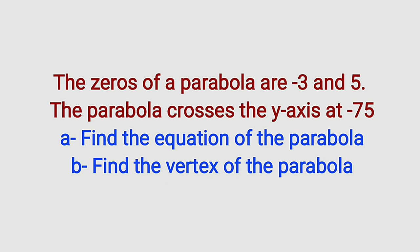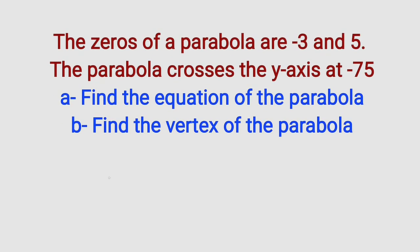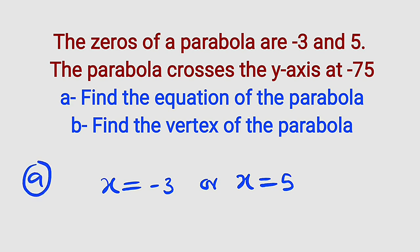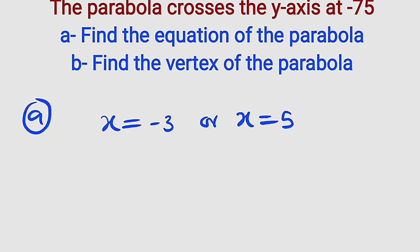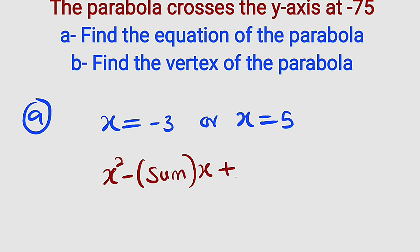Let's start with the first one: the equation of the parabola. If these are the zeros, it means they are the solutions to that quadratic equation. Therefore, if you solve that equation you obtain x equal to negative 3 or x equal to 5. We have a general formula used to find a quadratic equation when the zeros are given: x squared minus the sum of the roots, multiplied by x, plus the product of the roots, equal to zero.